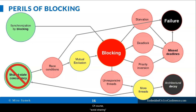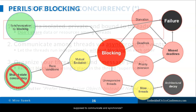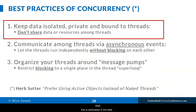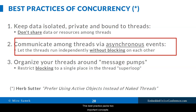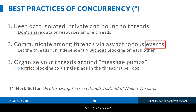Of course, avoid sharing is easy to say, but how are the threads supposed to communicate and synchronize? This is addressed in best practice number two: communicate among threads via asynchronous events. This best practice packs two important concepts — events or messages, and asynchronous communication.